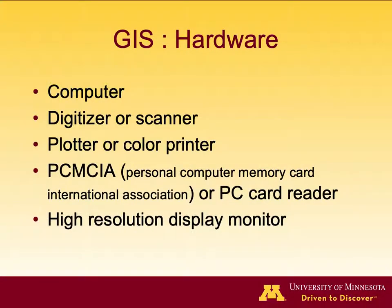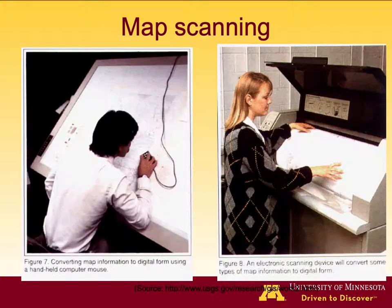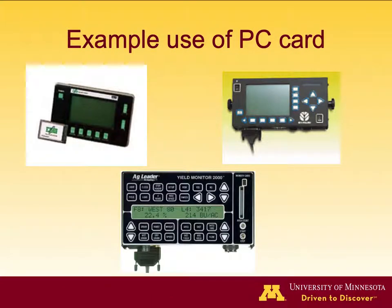GIS hardware includes computers, digitizer, scanner, plotter or color printer, PC card reader, and high resolution display monitor. There are also old-fashioned ways of scanning and digitizing paper maps. A best example of PC card use is from precision agriculture, where we get a yield map from a yield monitor — usually with yield information by weight or volume and moisture content, providing at least two layers.